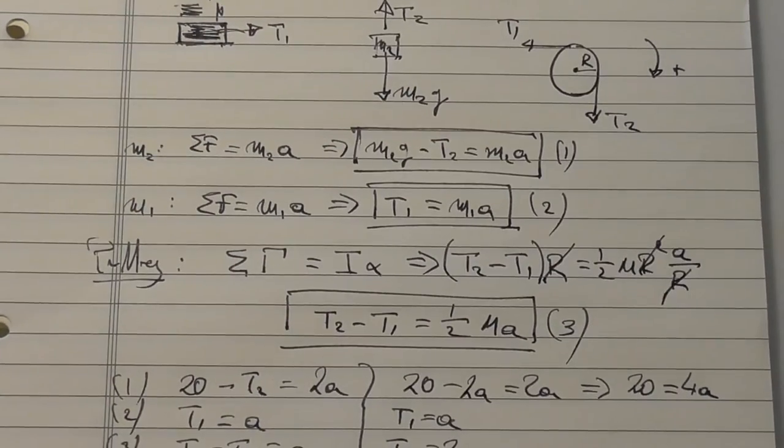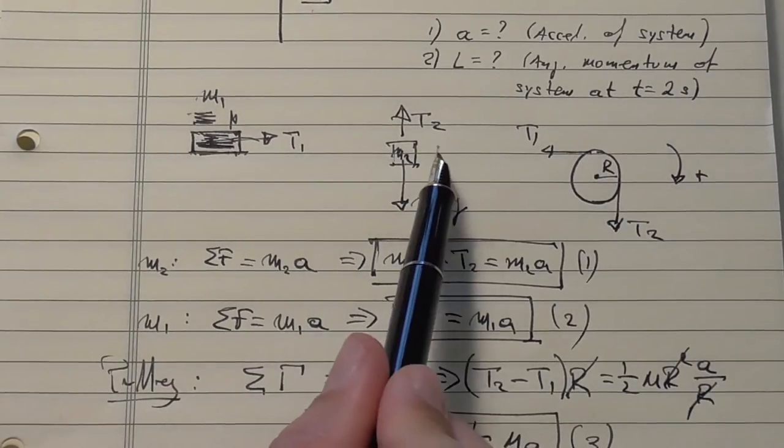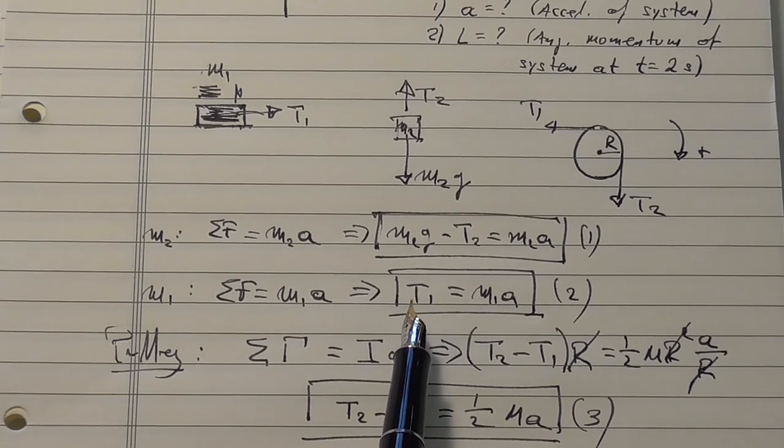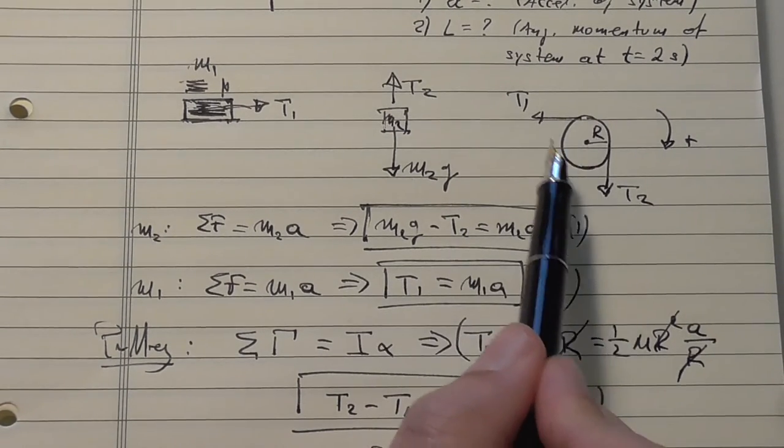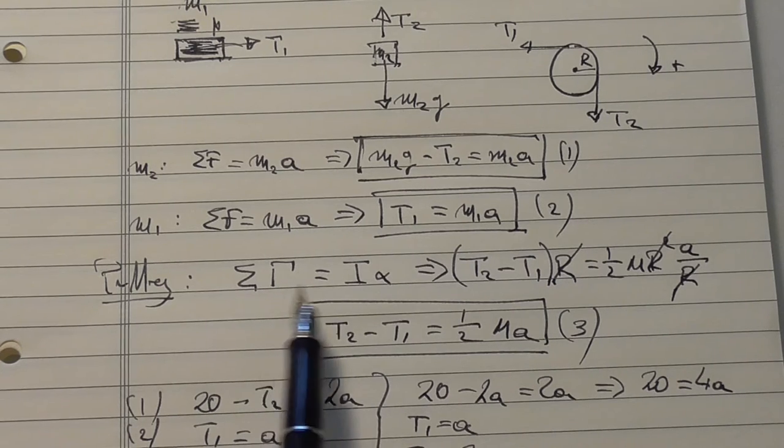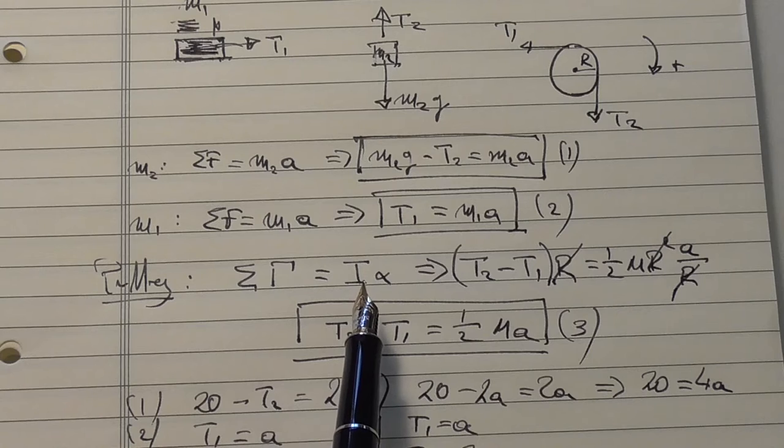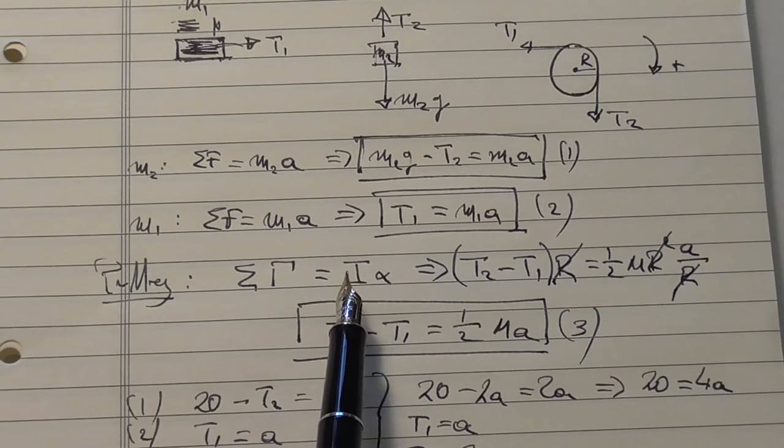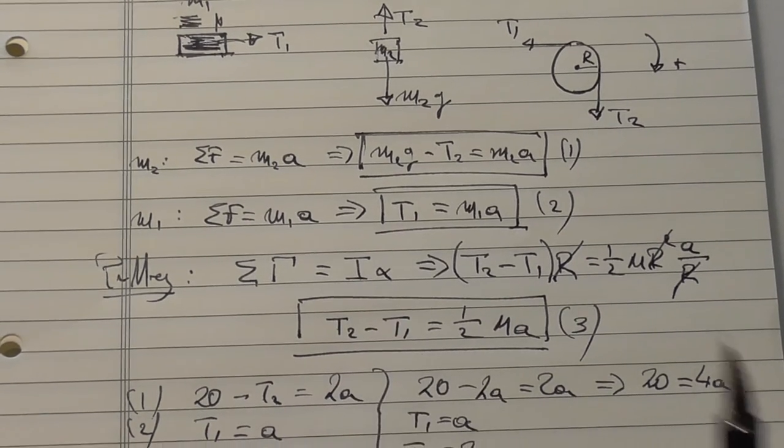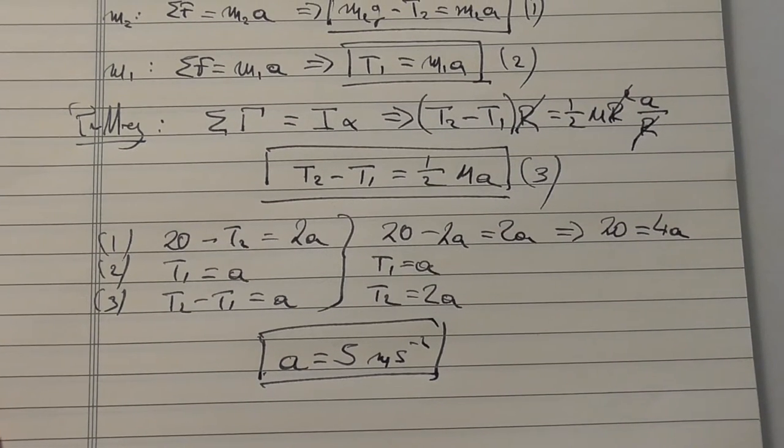T1 is a, goes to the other side, becomes 2a. So T2 is 2a. The first equation is 20 minus 2a, which is the second tension, is equal to 2a. So the first equation will give us the acceleration. 20 is equal to 4a. So a should be 5. We answered the first question, and that's SI units meters per second to the minus 2. What we did is, as usual, we did the free body diagram, we applied Newton's laws on the two bodies, but on the third one, the disc, the rotating disc, we had to apply Newton's law but for rotational motion.